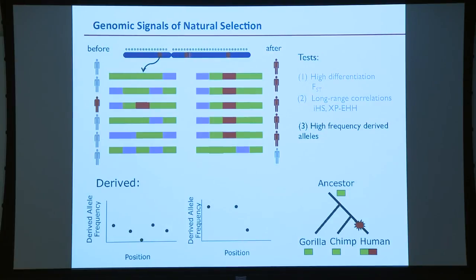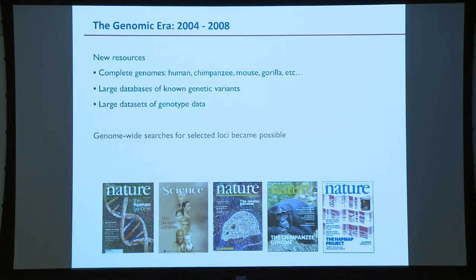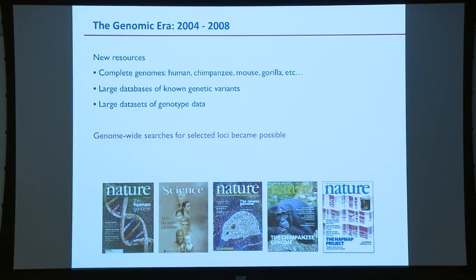There's a third signal: an excess of high-frequency derived alleles. Typically derived alleles are low-frequency on average, but if some derived alleles sit on an initially-selected chromosome, they'll be raised to high frequency along with the beneficial variant, providing additional information. Looking back at a primer on natural selection from 2007, this was hot stuff — we were in the genomic era with complete genomes, big SNP databases, and HapMap coming out. We could look across the entire genome and see where positive selection had occurred. The peak years were roughly 2004 to 2008.